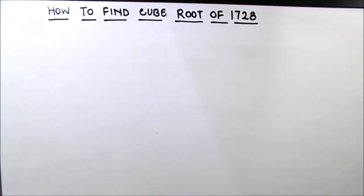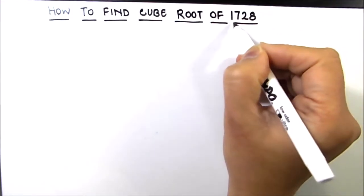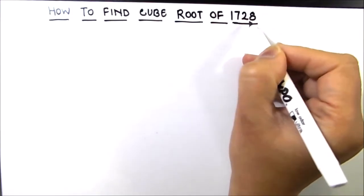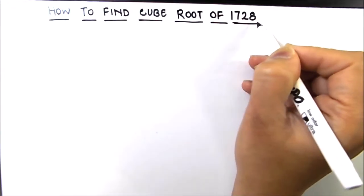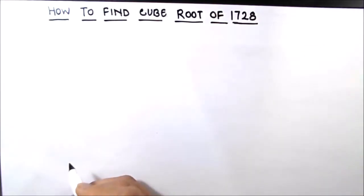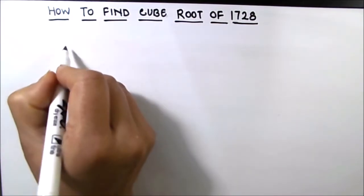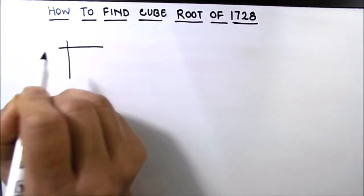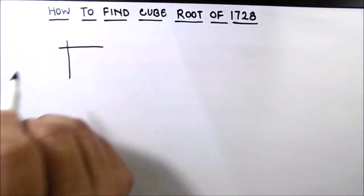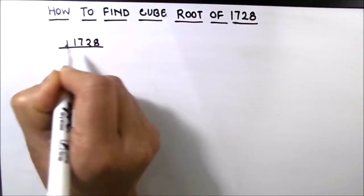In the prime factorization method, we divide this number by its prime factors and write it as a product of its prime factors. Then, taking the cube root, we can find the cube root of this number. So let's start with the method here for doing the prime factorization of 1728.